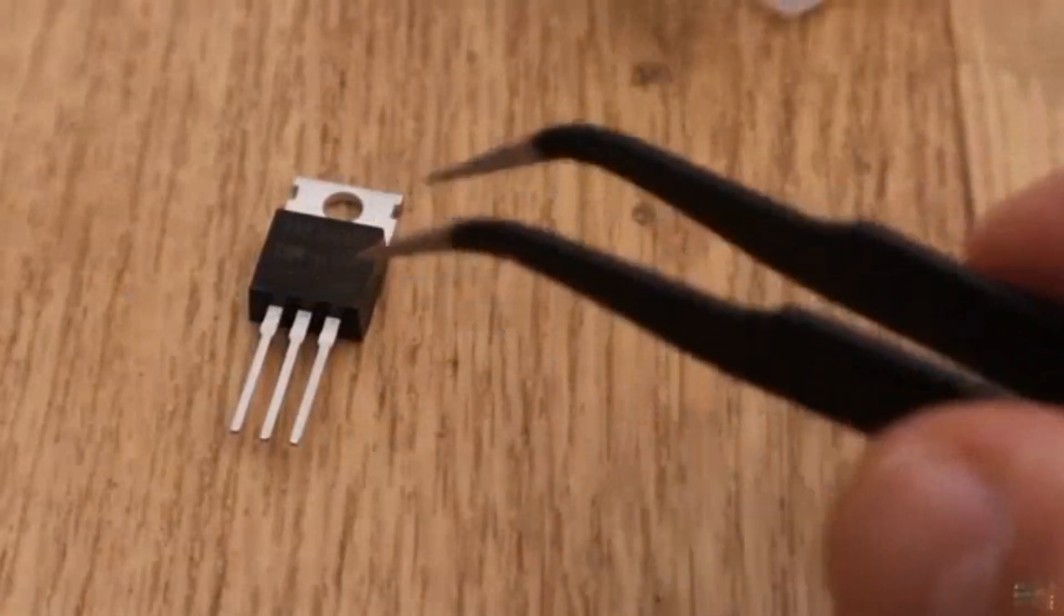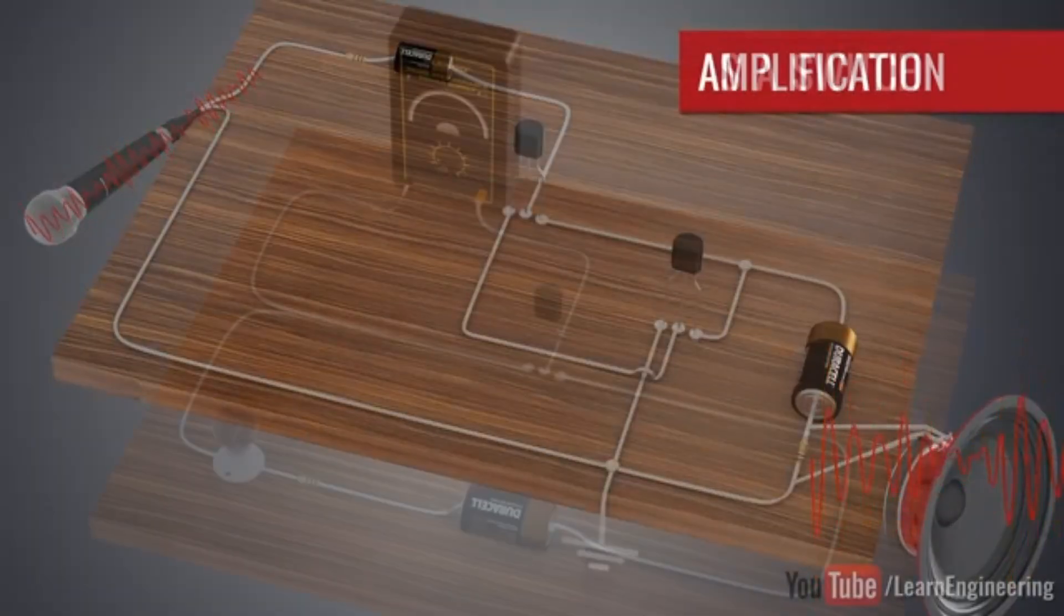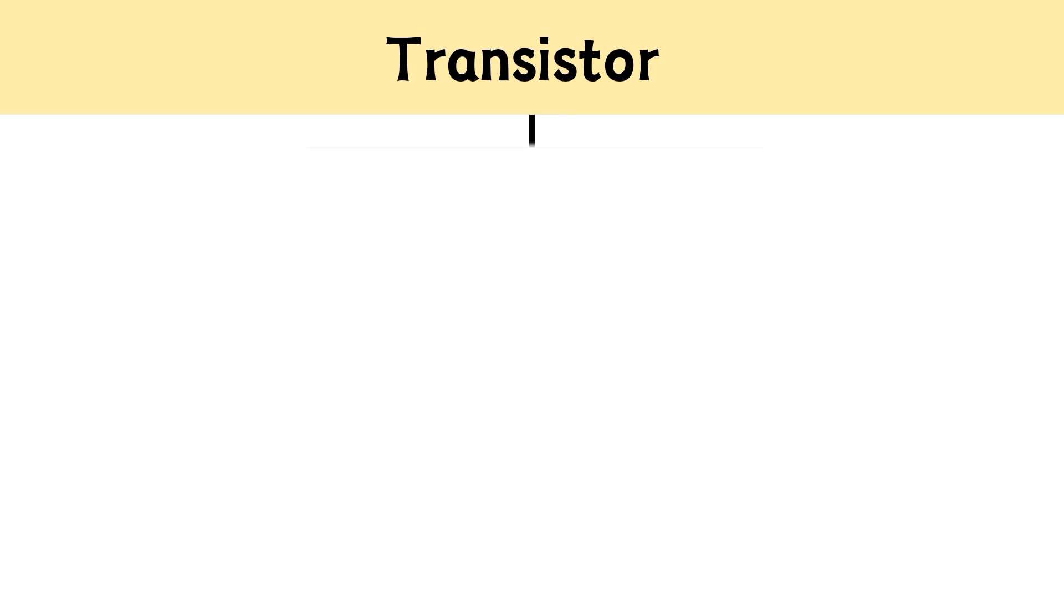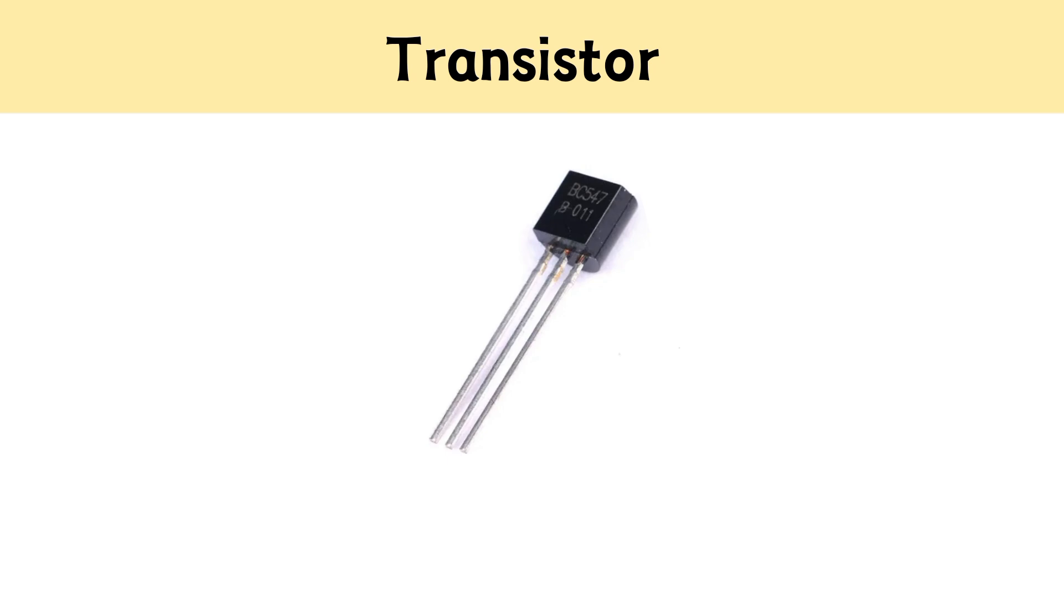A transistor is a three-terminal solid-state device. It is used as a signal amplifier or electronic switch. Transistors have two basic types: bipolar junction transistor (BJT) and metal oxide field effect transistor (MOSFET). In this video, we will only discuss BJT as it is relatively easier to understand.